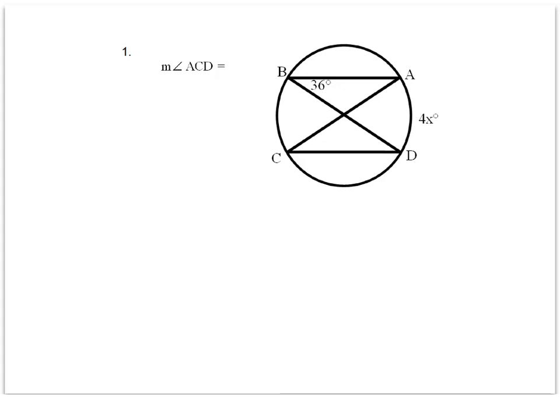This video is Practice Problems 1. We have two diagrams where we're going to do them separately and find the missing values. The first diagram shows four inscribed angles in the circle.